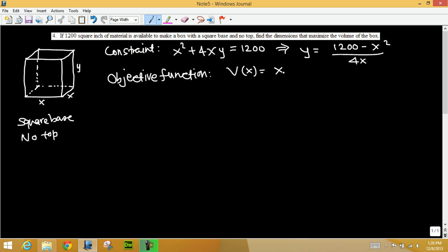x times x, x squared y. And that's x squared times y, y is given as 1200 minus x squared over 4x. So x squared times everything. Now we can cancel one x from top and bottom, and that leaves just x. And we can multiply the top, that x times 1200 is 1200x, minus x times x squared is x cubed, over 4.